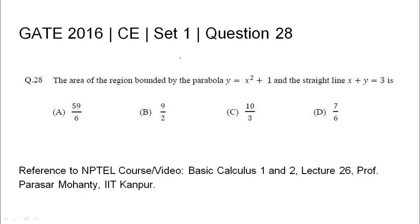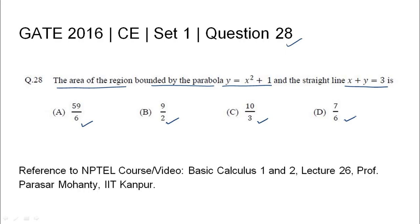GATE 2016 Civil Engineering Set 1, Question 28: The area of the region bounded by the parabola y equals x squared plus 1 and the straight line x plus y equals 3. Four options are given: A) 59/6, B) 9/2, C) 10/3, and D) 7/6. The relevant NPTEL reference has been cited.